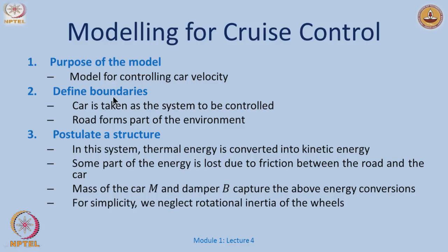If we go back to the steps of modeling, the first step would say: what is the purpose of the model? The purpose is to understand the velocity behavior of a car and therefore to control the velocity. How do we define the boundaries? We look at the car as a system to be controlled, and it travels on a highway or a road that forms part of the environment.